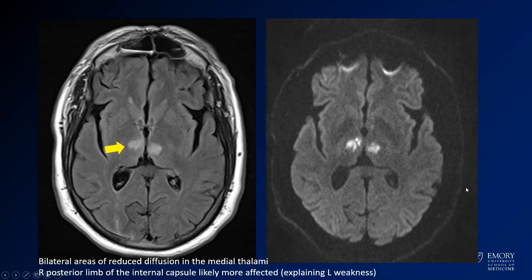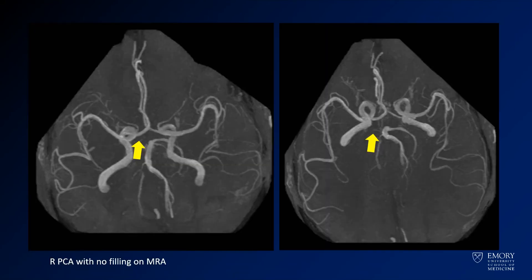In this case, you have abnormal FLAIR in the bilateral medial thalamus. When you look at the diffusion, you have abnormal diffusion in the medial thalamus, which suggests bilateral infarcts. On the MRA, there is an absent right PCA — the right PCA is occluded — which aligns with this because the right Artery of Percheron is occluded, as it arises from that right PCA.